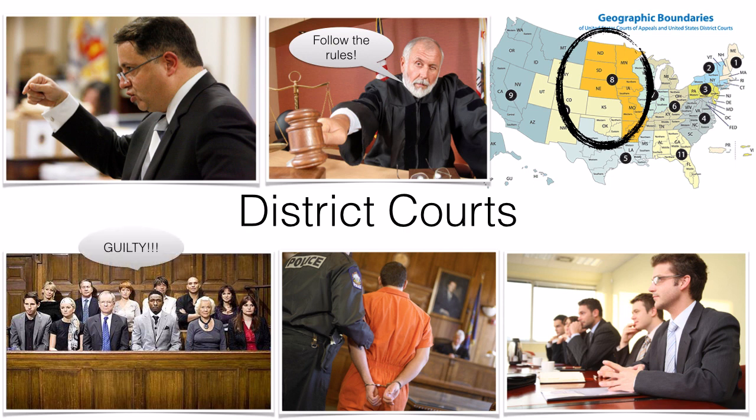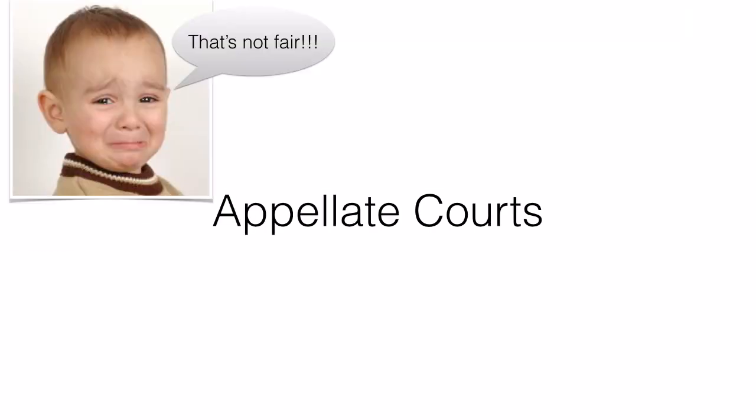Sometimes a defendant who loses in district court feels like they did not get a fair trial. Maybe evidence was missed, or they had a misinformed jury, or some other reason for being found guilty when they were not. If they can prove any of these things to be true, they might be able to get another chance at a second level of federal courts known as the appellate court.